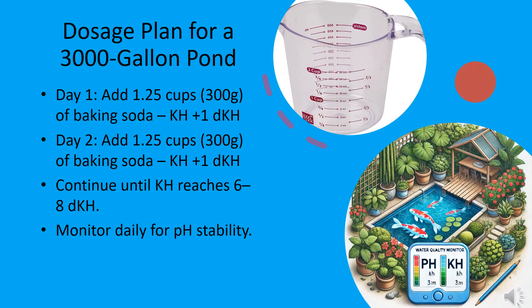Here's a step-by-step dosage plan for a 3,000-gallon pond. On day one, add 1.25 cups, or 300 grams, of baking soda. This will raise your KH by 1 dKH. Repeat this process daily until your KH reaches a stable level between 6 and 8 dKH. Monitor your pH daily to ensure stability.